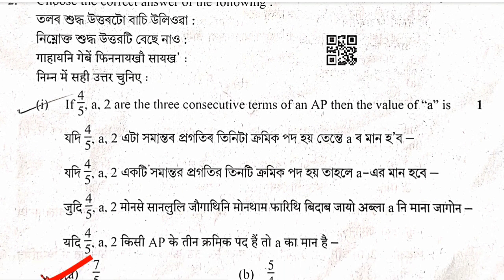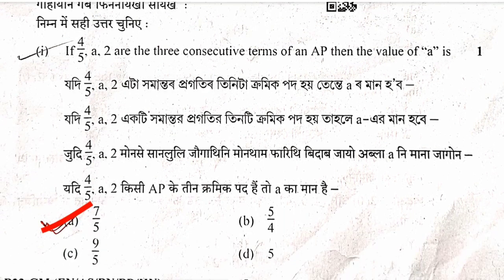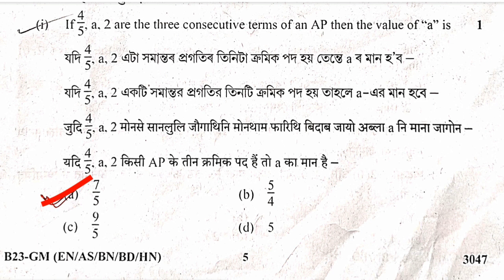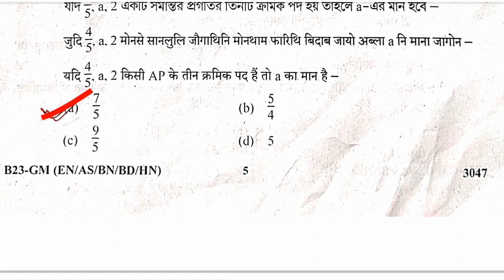Question 2: If 4/5, a, and 2 are three consecutive terms of an AP, then find the value of a. In an AP the common difference d is always equal, so a minus 4/5 equals 2 minus a. Solving gives a equals 7/5. Option B is correct.